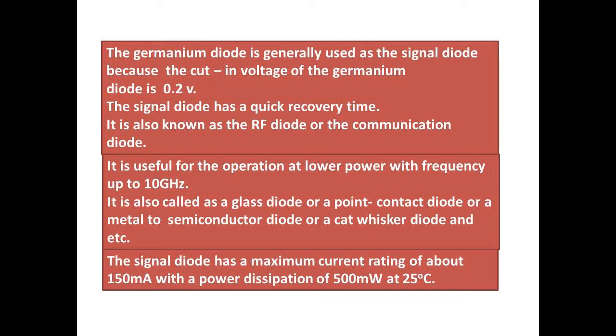The signal diode has a quick recovery time. It is also known as the RF diode or the communication diode. It is useful for operation at lower power with frequency up to 10 GHz. It is also called a glass diode, or a point-contact diode, or a metal to semiconductor diode, or a cat-whisker diode.